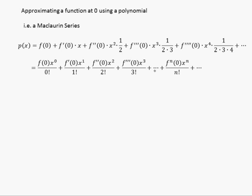We can neaten it up this way. You've got f of zero times x to the zero over zero factorial, the first derivative at zero times x to the one over one factorial, the second derivative at zero times x squared over two factorial, the third derivative at zero times x cubed over three factorial. In general, you've got the nth derivative at zero times x to the power n over n factorial. That's the Maclaurin series.